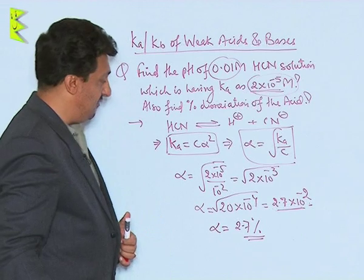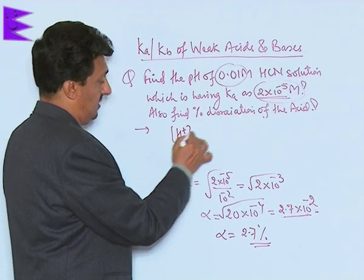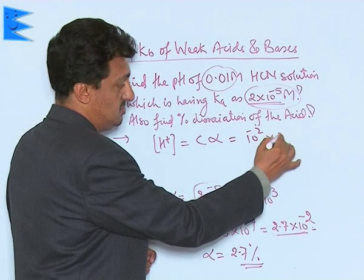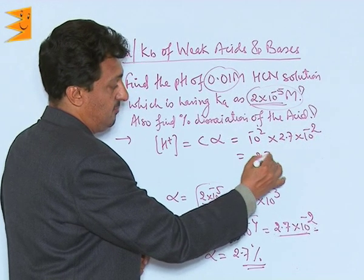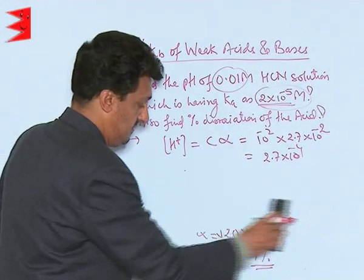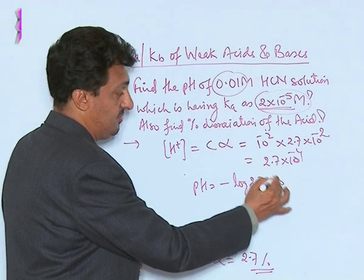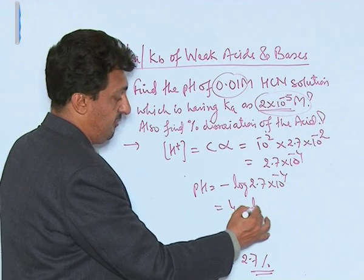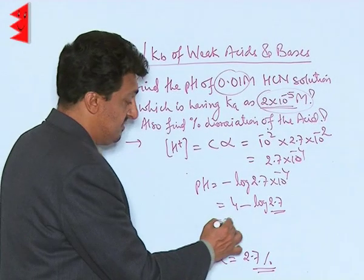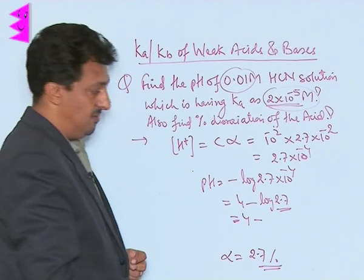Once we know alpha, we can find the H⁺ concentration, which is always Cα. So it will be 10⁻² × 2.7 × 10⁻² = 2.7 × 10⁻⁴. The pH = −log(2.7 × 10⁻⁴), which equals 4 − log(2.7). Since log 2 = 0.3010 and log 4 = 0.4771, log 2.7 is approximately 0.42.